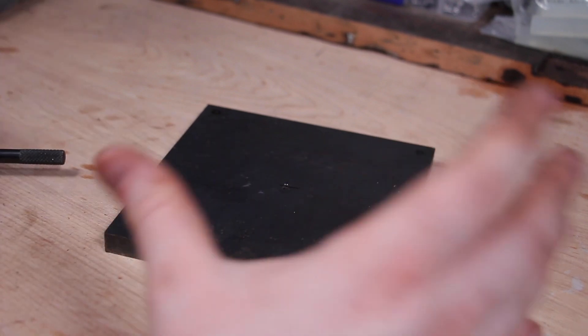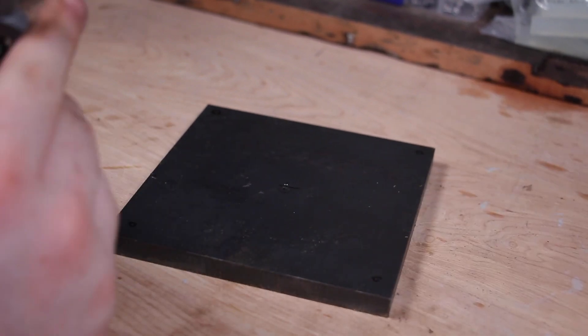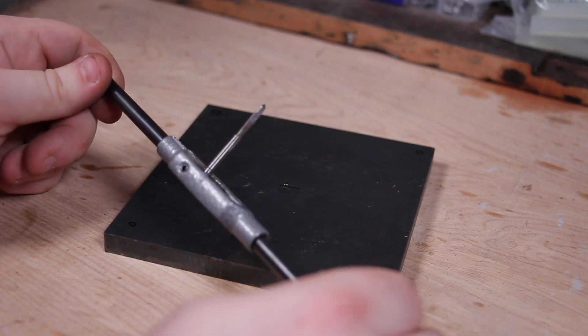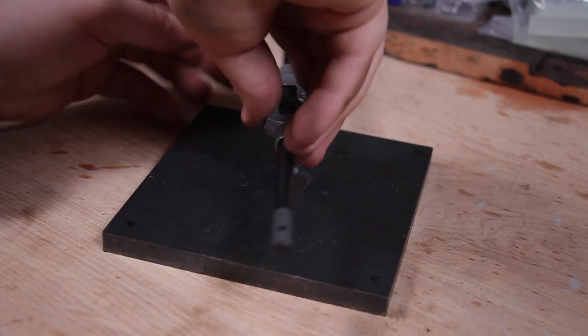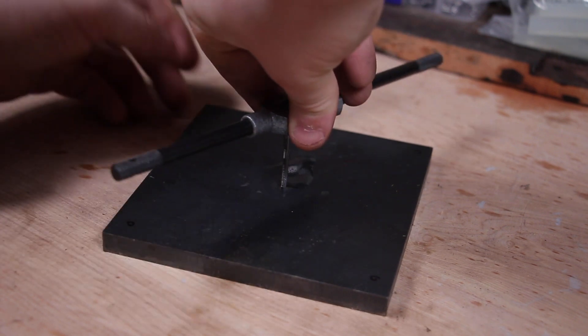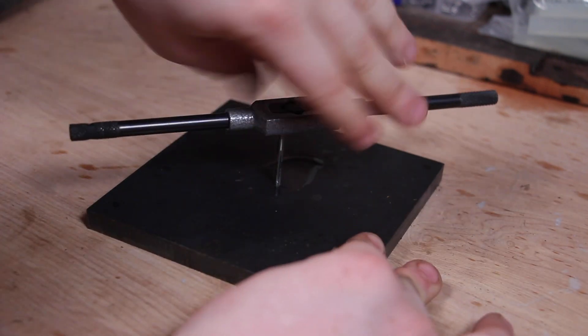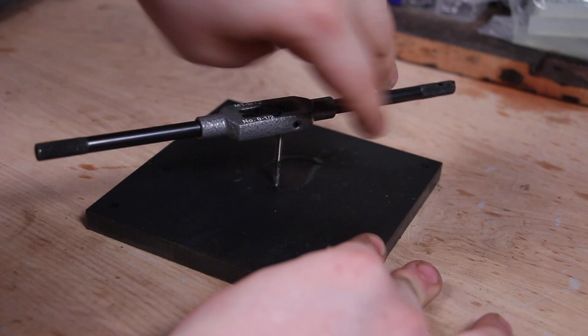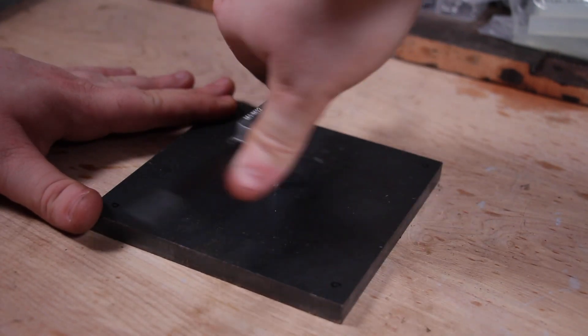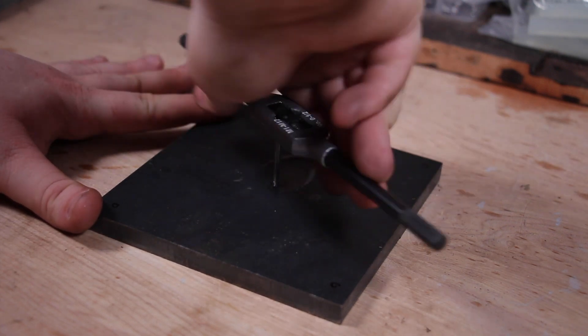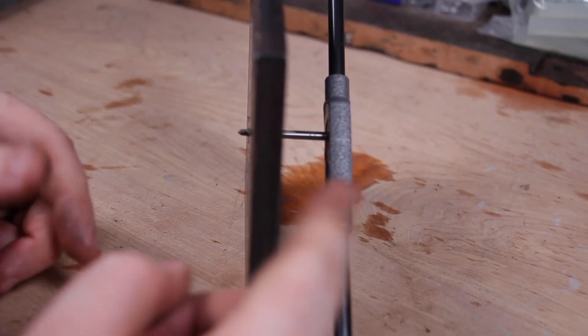So now we can start tapping the steel plate. We're going to be using this little M3 starter tap. Now we can see the tap is fully way through.